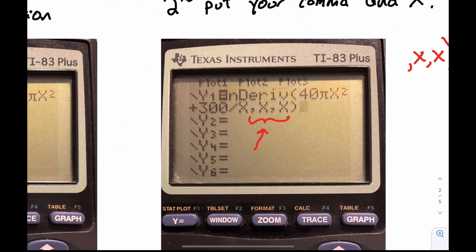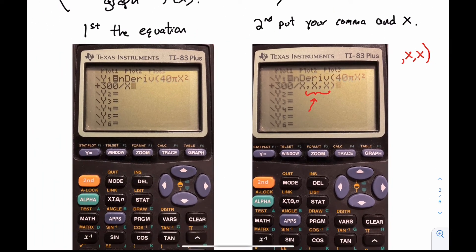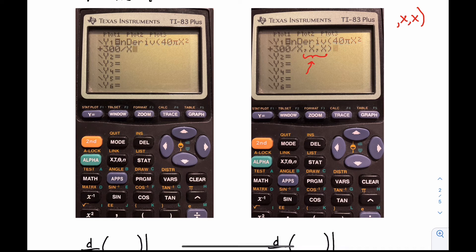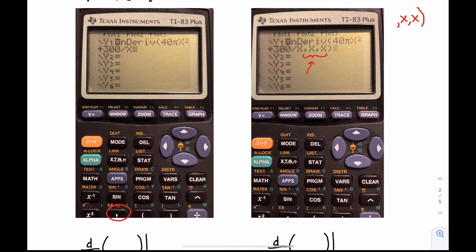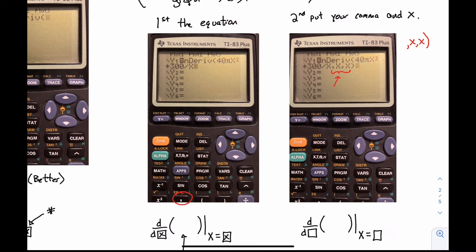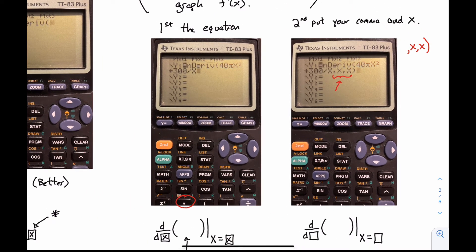But basically, you need to tell the calculator what you're taking the derivative with respect to and what number you want to put in. We're not putting in a number. It's just x. So there's a comma and an x and a comma and an x that you would plug in after that. If you're looking for the comma key, it is actually underneath sine. So it's down there. So you'll need that comma. That's what your calculator should look like.